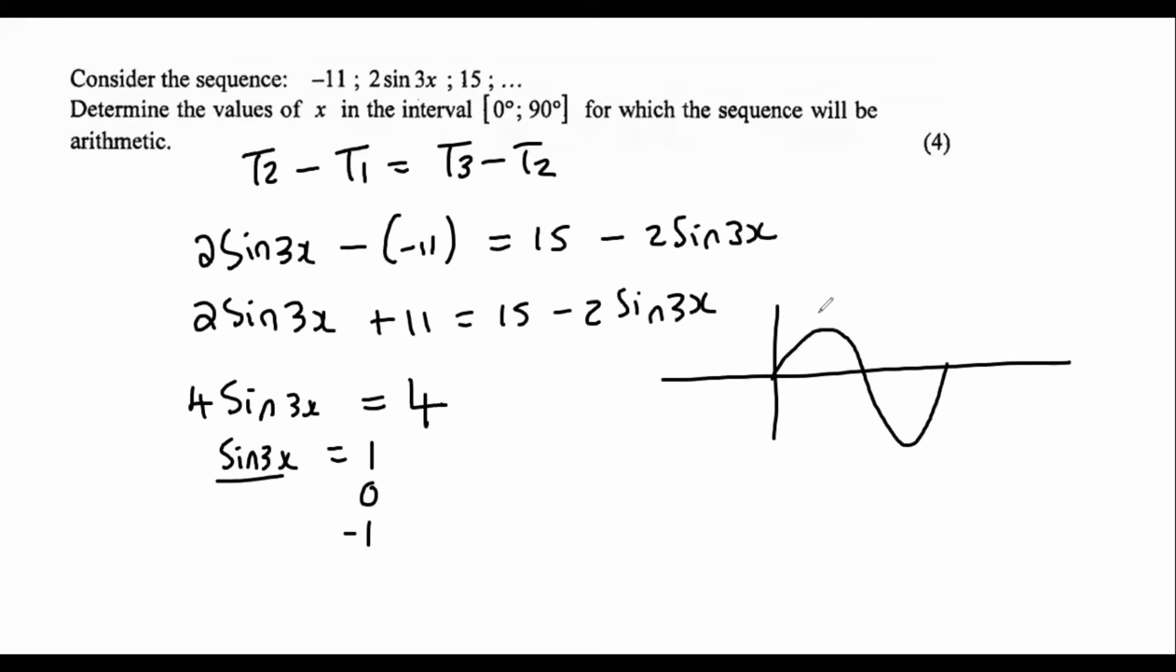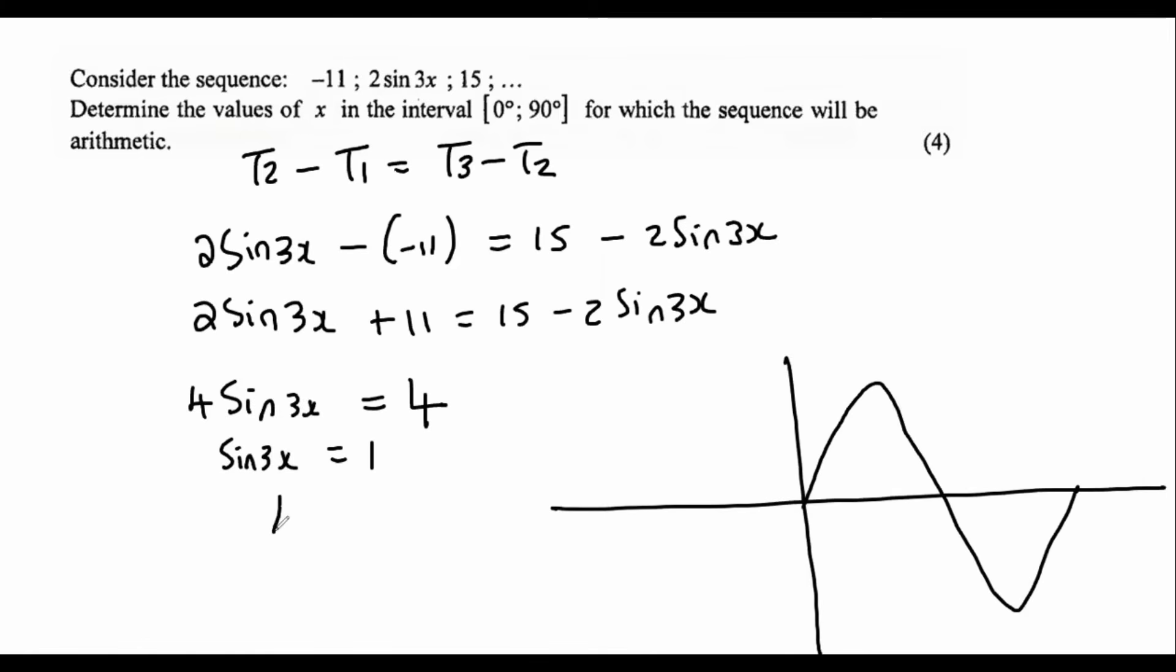If I draw a sin graph, then it's very easy to see where the graph is supposed to be equal to 1. It's supposed to be equal to 1 over there. But then there's other students that would maybe like to use the reference angle approach. So let me do both because I know that there's two different types of students who are watching this. For the first method, I'm just going to draw the graph. And it's a normal sin graph. Yes, I know there's a 3x there, but we'll fix that up just now. So I know that the sin graph is equal to 1 at 90 degrees.